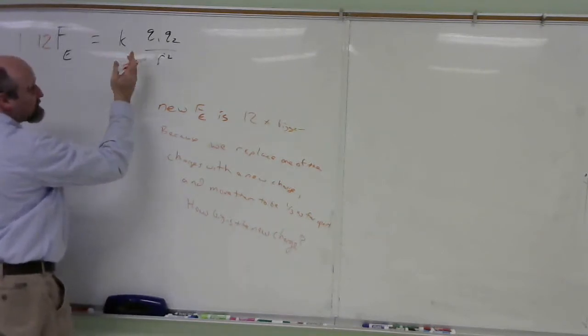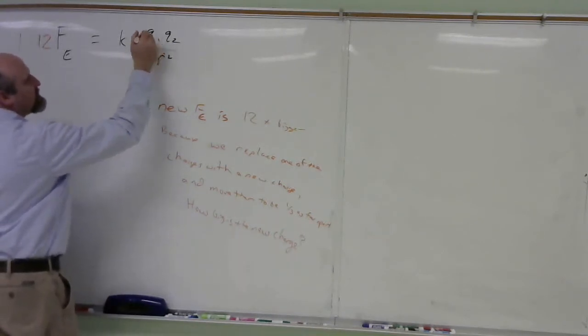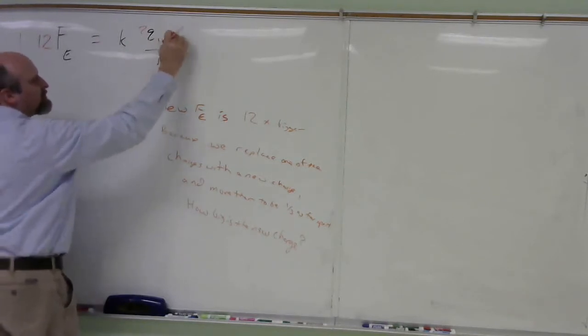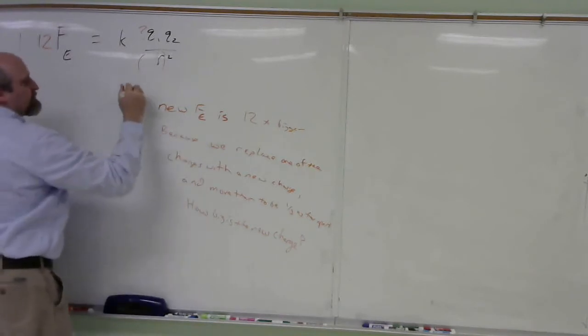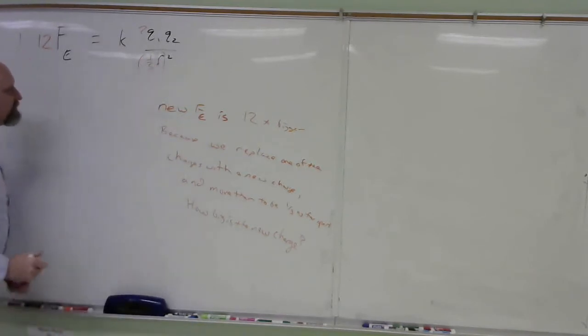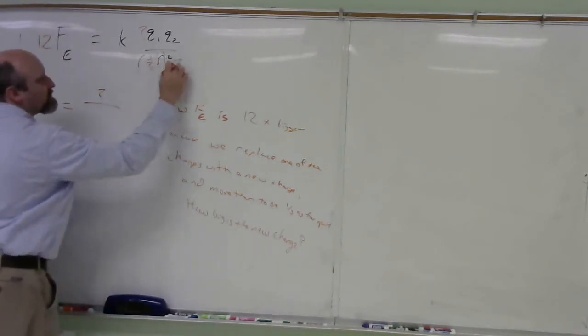We didn't change K, that's a constant. We made one of the charges some amount bigger. We don't know what to multiply by. The other charge we kept the same, but the distance we made, one third as far apart. So now when you do this, you say, okay, I know the black part balanced out equaled the black part, but I made these little changes. I can actually pull out the changes, and I can say that 12 has got to be equal to something over a third squared.